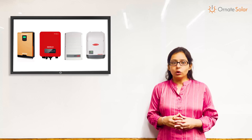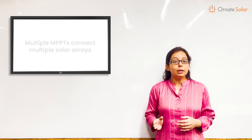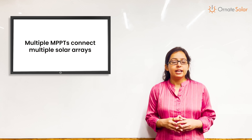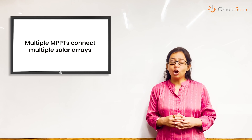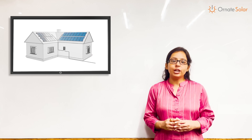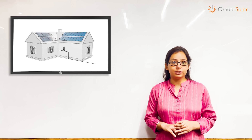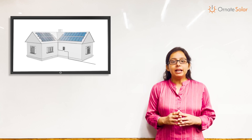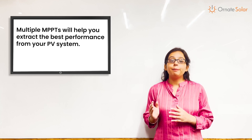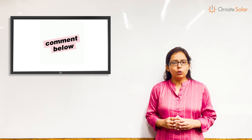Now some solar inverters have more than one MPPT input. This helps you connect multiple solar arrays installed at different orientations or directions. For example, if you have an L-shaped roof and panels are installed facing two different directions, then multiple MPPT inputs will help you extract the best performance from your solar system.